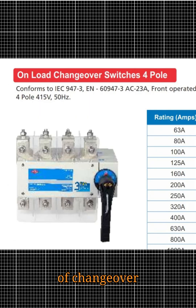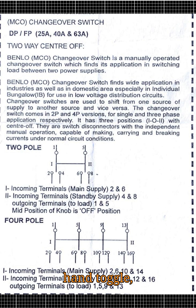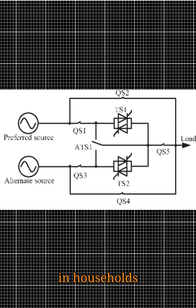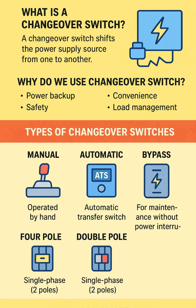Types of changeover switches. 1. Manual changeover switch — operated by hand using a toggle, rotary, or lever. Common in households and small shops. Requires human intervention during a power cut. Advantage: cheaper and simple. Drawback: slower, needs manual action.